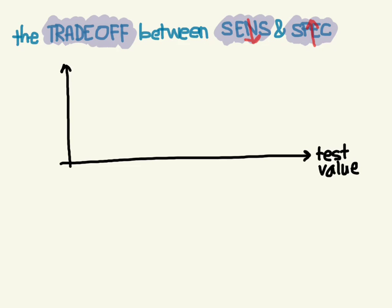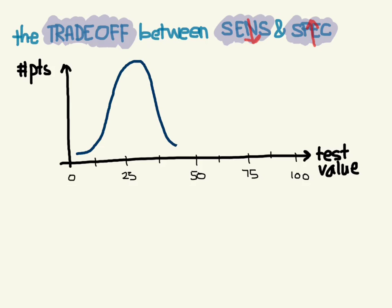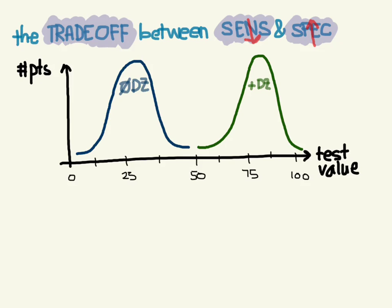Let's take a look at this. We're going to plot the test value against the number of patients who have that value. Let's say for this given test, the values are between 0 and 100. If you run this test on patients who don't have the disease, you get a histogram where most people are going to be somewhere around 26 — some closer to 0, some maybe around 45. But these are people who don't have the disease. Now if we run this same test on people who do have the disease, you get a distribution where the mean is about 80.